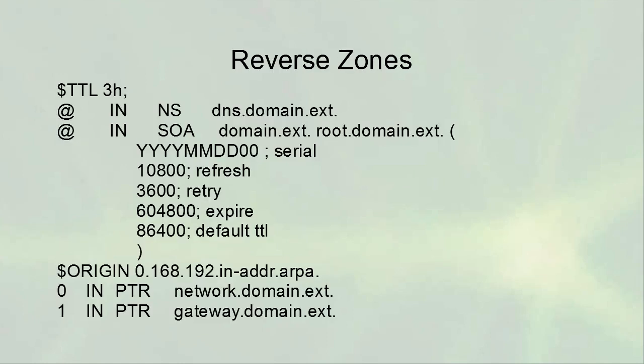Reverse zones look similar at the top. Using the '$ORIGIN' directive to specify individual pieces — for a 192.168.0 range — you'd see an entry like '0  IN  PTR  network.domain.ext.' which is a pointer record telling you the name for that IP address in a reverse lookup. You can also see entries for individual hosts like .1.